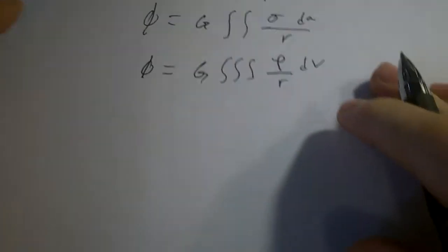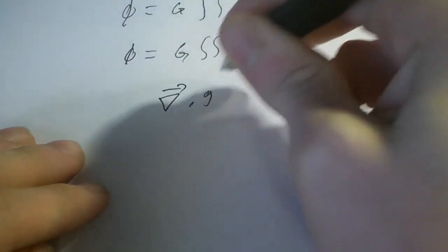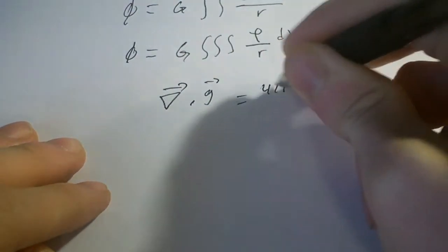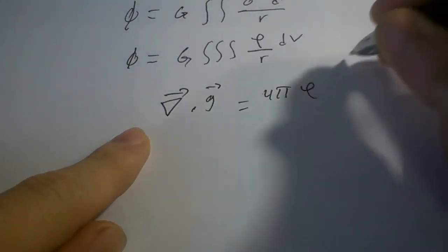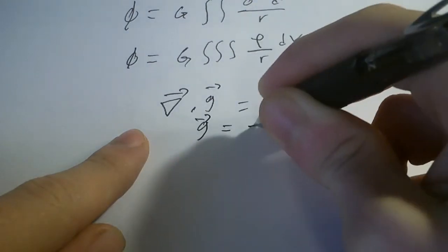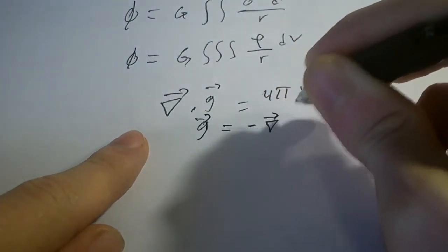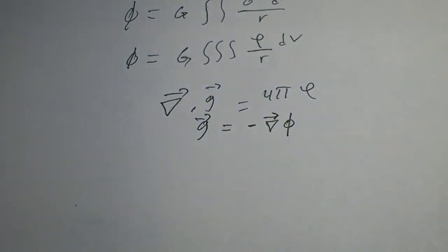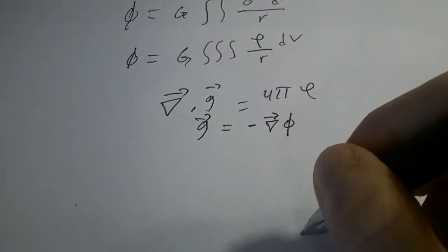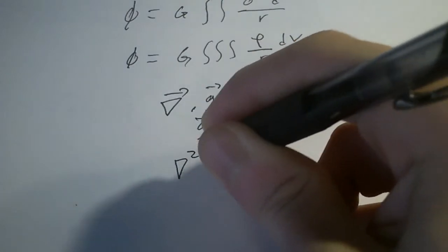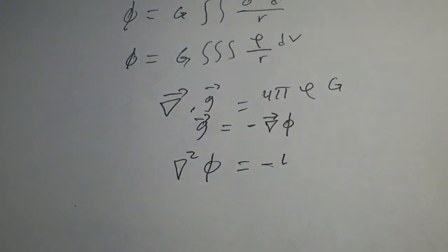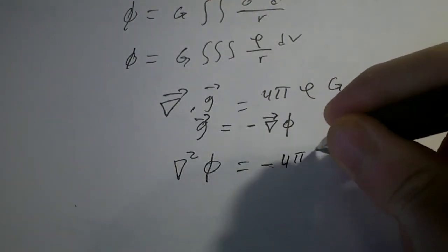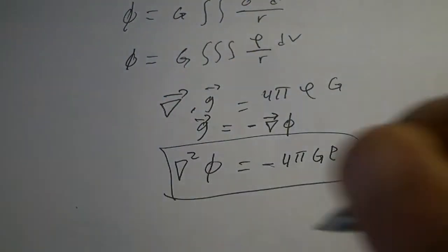Recall that the divergence of g equals 4 pi G rho. Since g equals minus the gradient of some scalar field phi, we can say that the Laplacian — grad squared phi — equals minus 4 pi G rho.